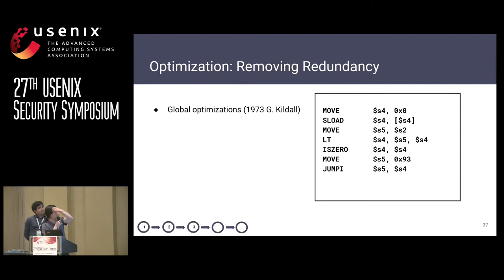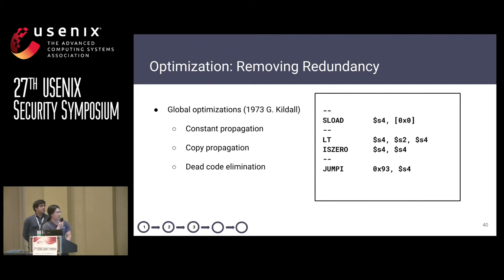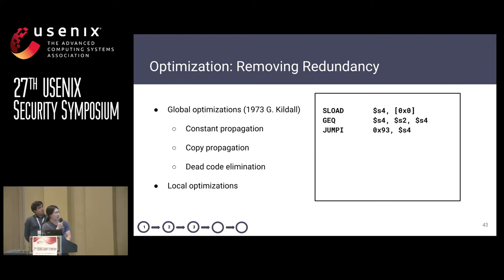In the next step, we noticed that there are a lot of redundancies in our lifted representation, mainly due to stack operations that tend to move data around a lot. To remove these redundancies, we use common global optimizations, mainly data flow analysis, which includes constant propagation, copy propagation, and dead code elimination. We also implement some local optimizations that are customized. For example, LT and EQ0 could be rewritten into GEQ, and eventually this block could be optimized into just three instructions.